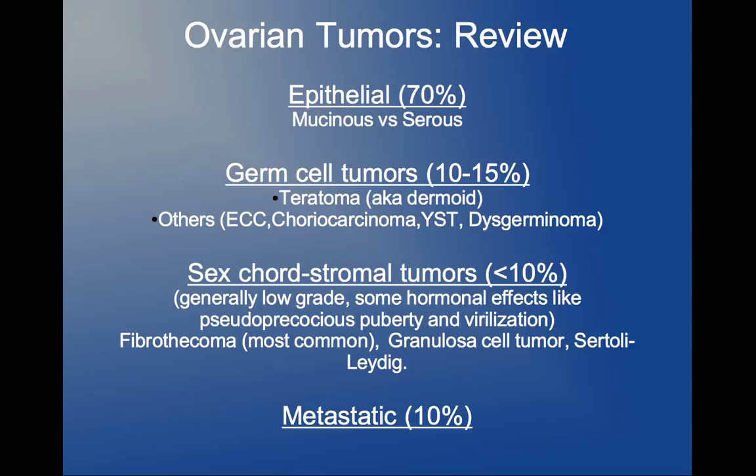Moving on to germ cell tumors, these are going to be around 10% to 15% of ovarian tumors. The main one is the teratoma, also known as dermoid. However, there are other tumors in this category to know: choriocarcinoma, yolk sac tumor, dysgerminoma, and embryonal cell carcinoma. Aside from the teratoma, the other germ cell tumors are going to have different appearances and it may be hard to distinguish them.